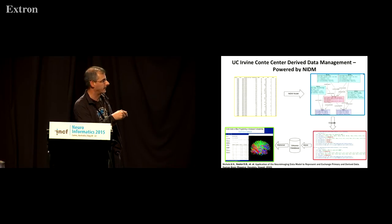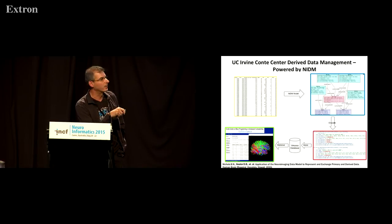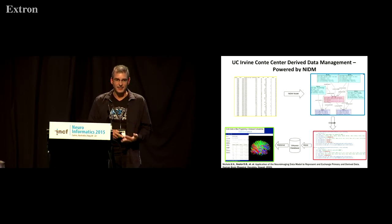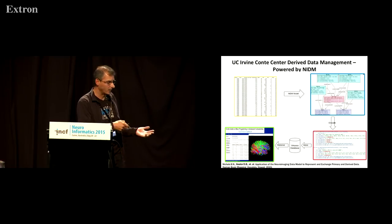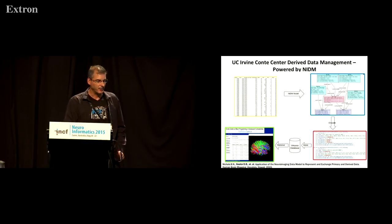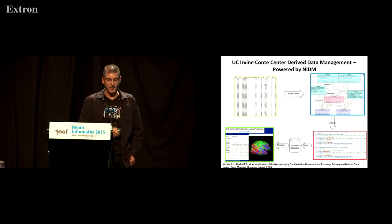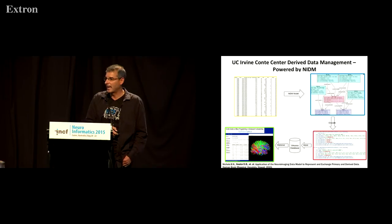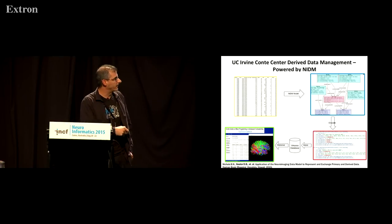Let's take a quick example of the process we would go through to use something like this. Here I've got just an Excel spreadsheet or any kind of tabular data — the columns are variables and the rows are subjects. What we're going to do is model the variables and how they relate to one another with what we call an object model, using entities, activities, agents, and some fixed sets of relations that come with the provenance data model. We create this object model — a graph of how our variables relate to one another and how they relate to the subjects, and what attributes we think are important to describe these variables or objects.